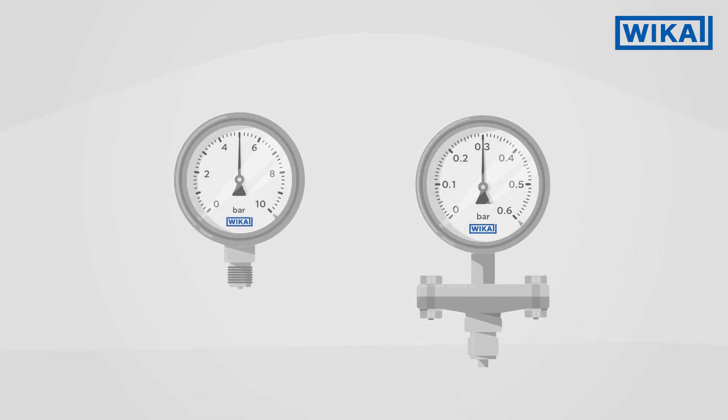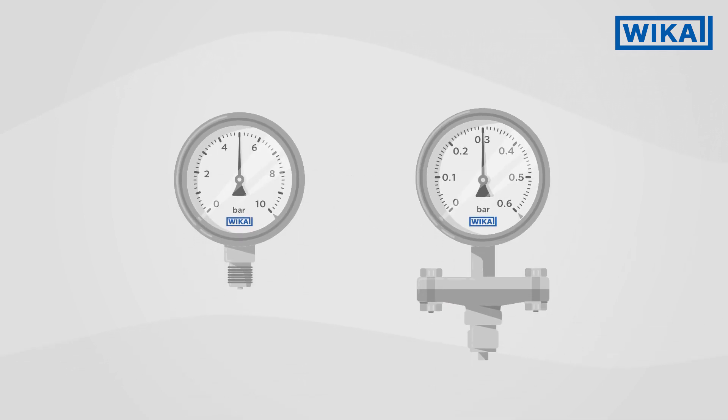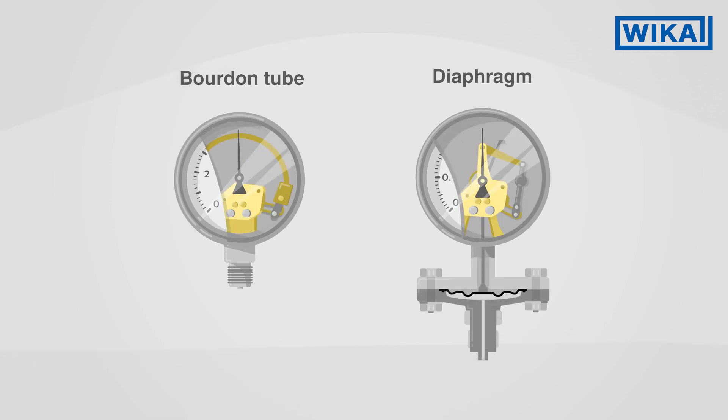In industrial measurement technology, two different types of pressure gauges are used: Bourdon tube pressure gauges and diaphragm pressure gauges. They have different operating principles and are therefore suitable for different applications.